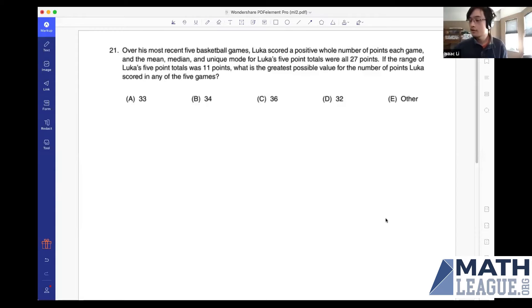All right, here is Sprint 21. Over his most recent five basketball games, Lucas scored a positive whole number of points each game, and the mean, median, and unique mode for Lucas' five-point totals were all 27 points. If the range of Lucas' five-point totals was 11 points, what is the greatest possible value of the number of points Lucas scored in any of the five games?